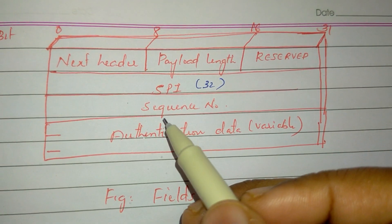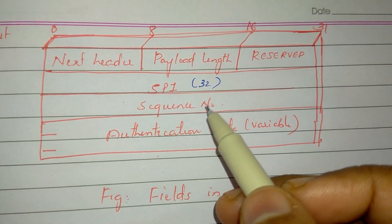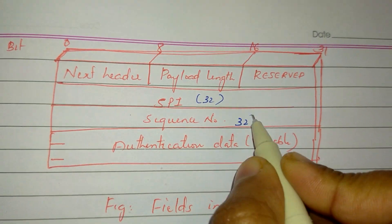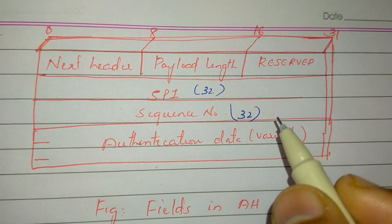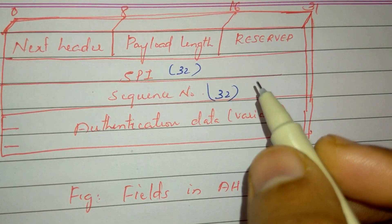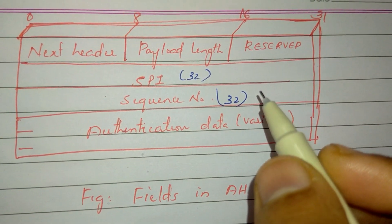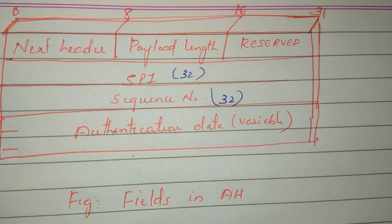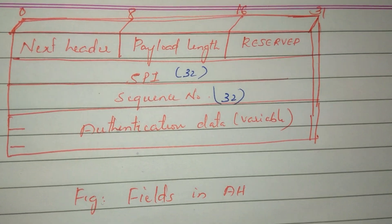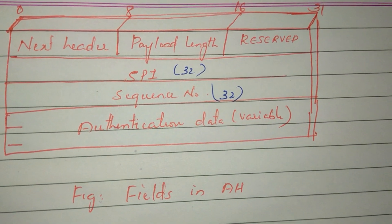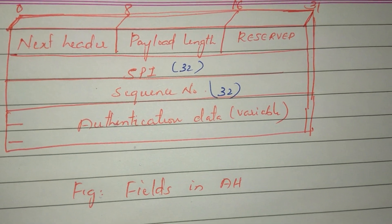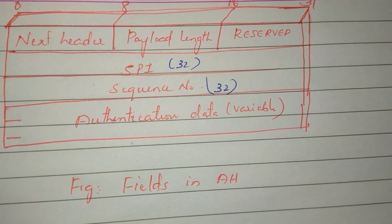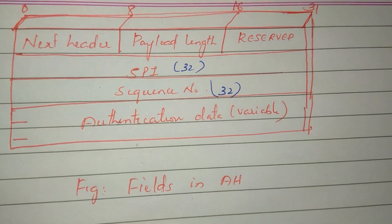The security parameter index is followed by a 32-bit sequence number. The sequence number is an increasing counter — one packet will provide a sequence number. On the receiver side, we will start by accepting the order of the sequence number.